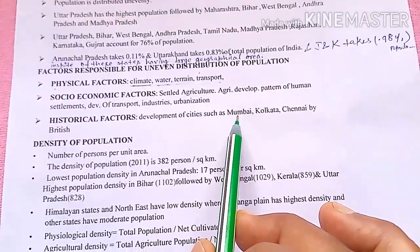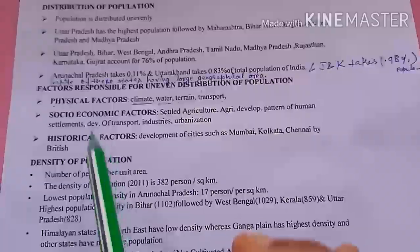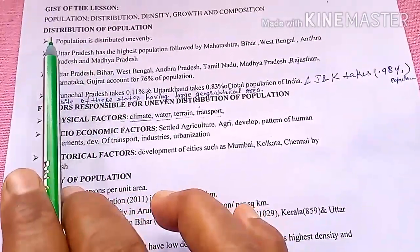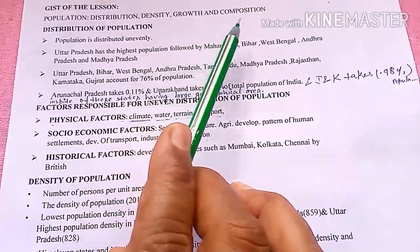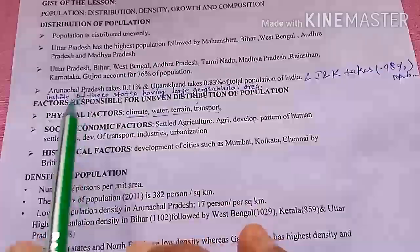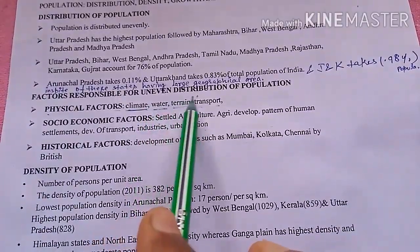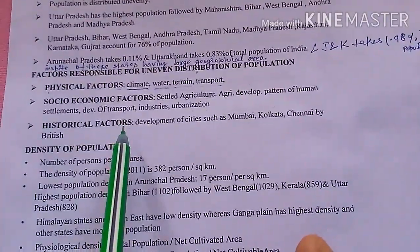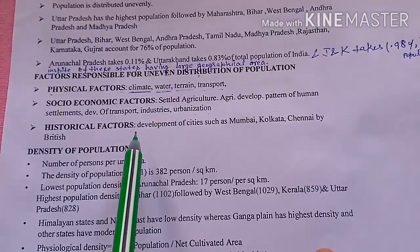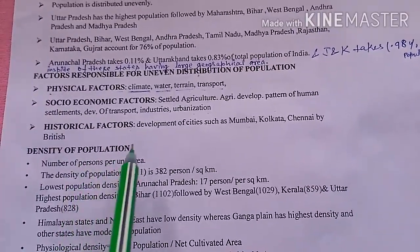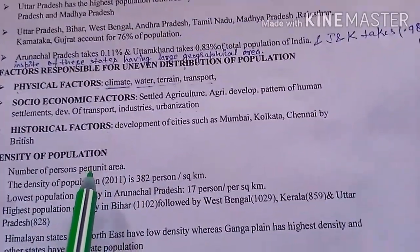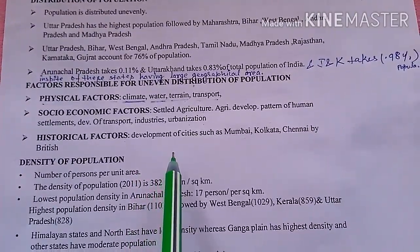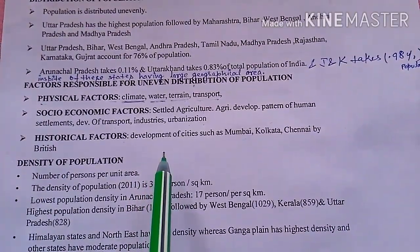So students, in this part we talked about the introduction of population distribution, density, growth and composition; distribution of the population; and factors responsible for the uneven distribution of the population. In the second part of this chapter, we will discuss density of population, growth of population, and different phases of population growth. Thank you.